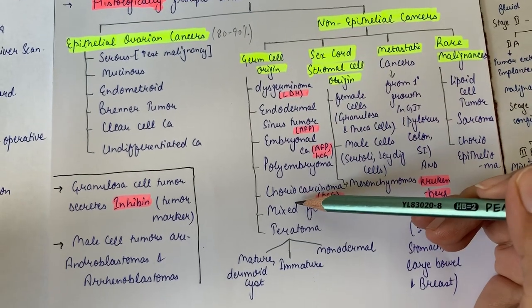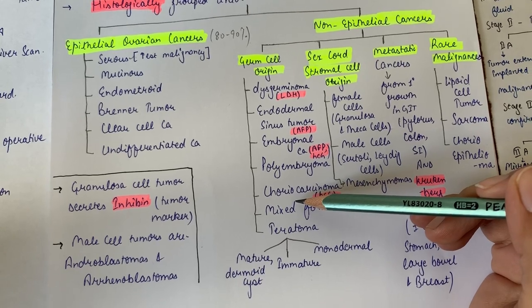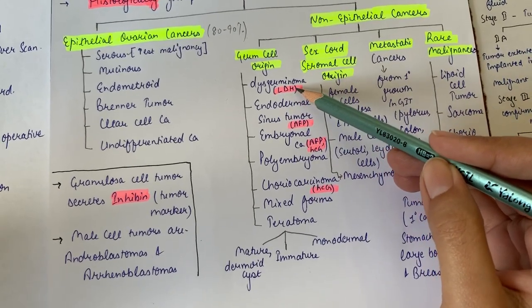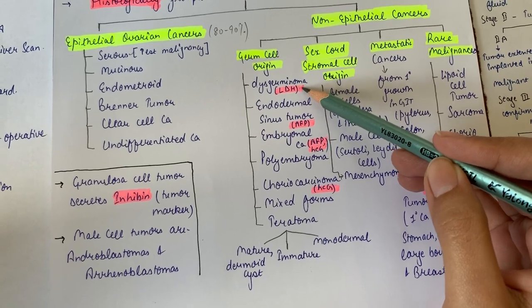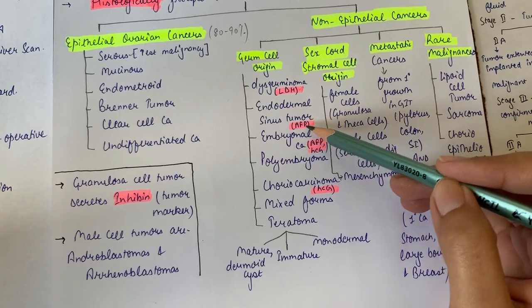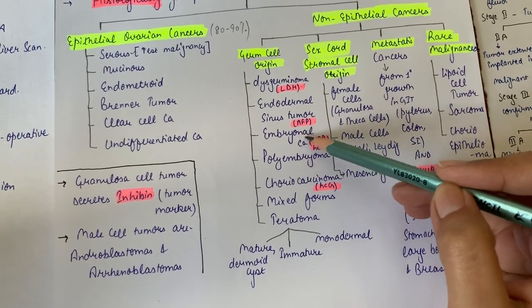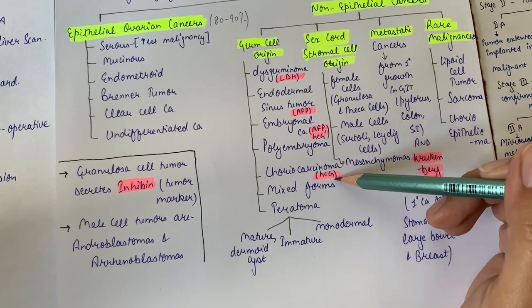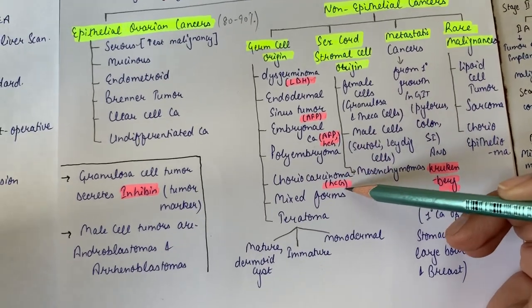The characteristic for these germ cell tumors is that they secrete biochemical substances that can be used as tumor markers, except dysgerminoma which secretes lactate dehydrogenase. Important biochemical markers here are from endodermal sinus tumor that secretes alpha-fetoprotein, embryonal carcinoma secretes alpha-fetoprotein and hCG, and choriocarcinoma secretes high levels of human chorionic gonadotropin or hCG.